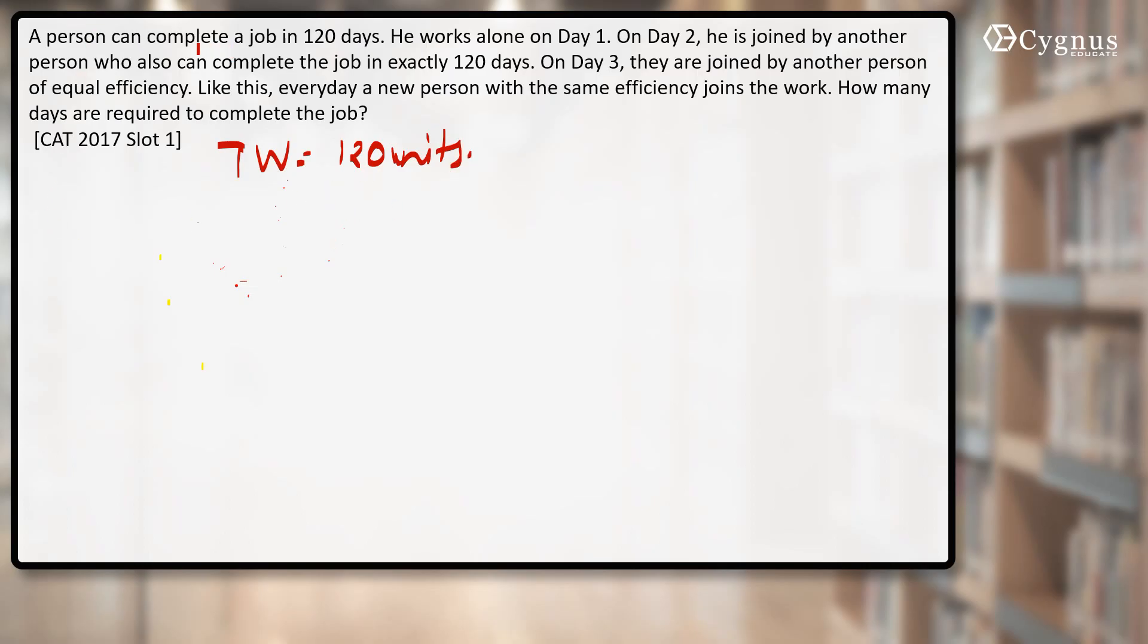Now, the person starts the job. He can finish it in 120 days, that means one day's work of each and every person will be how much? 120 by 120, that is one unit per day.